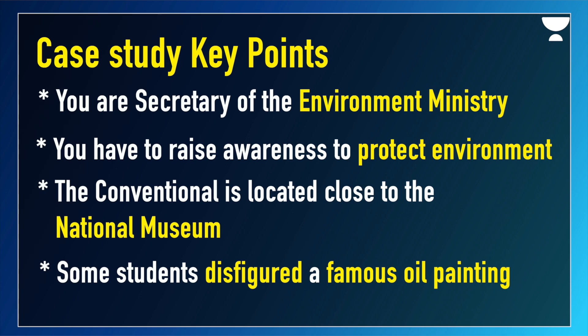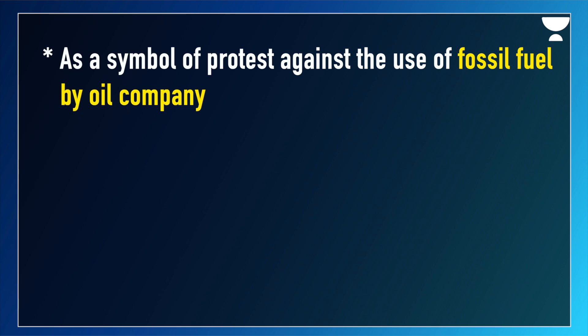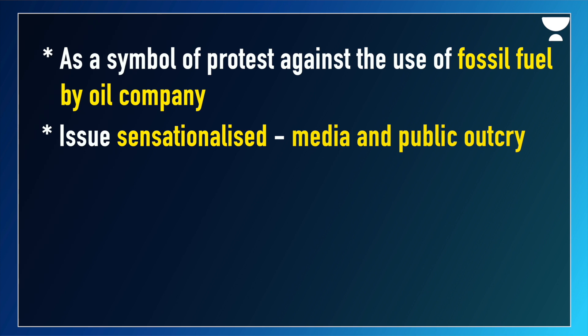These young students went to the museum and tried to disfigure an important, famous oil painting. Upon inquiring, it was found that they were trying to stage a protest to send a message to the oil companies to stop using oil, which is bad for the environment. They also said that they were only trying to help meet the aims of the Environment Convention that was being organized. The issue has been sensationalized and a variety of public opinions are floating in this regard, some in favor and some against.